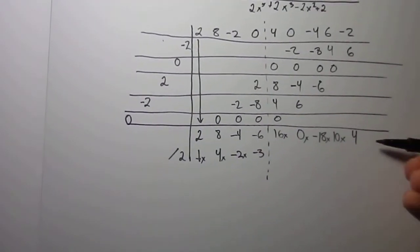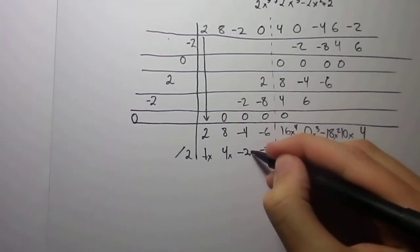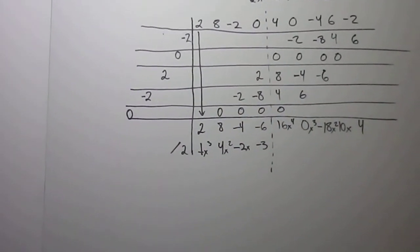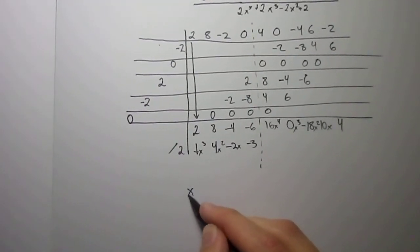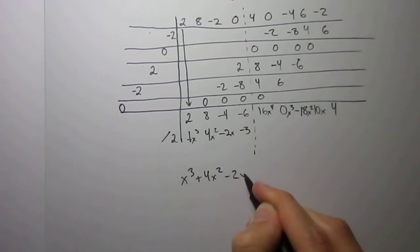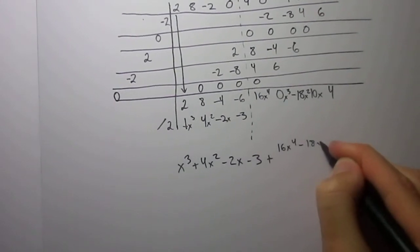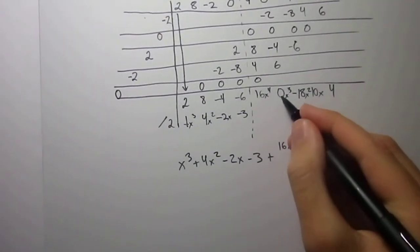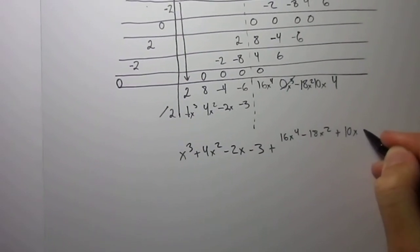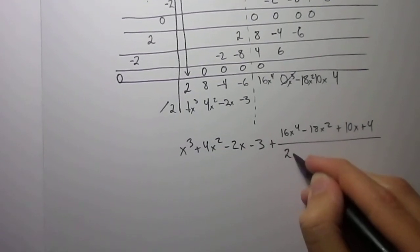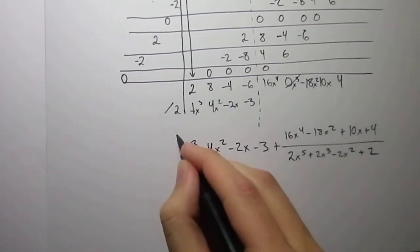Now, just go this way. You have 1, 2, 3, 4, so just numerically. Likewise, 1, 2, 3. And that's it. That's basically all that you have to do. And now, just put it all together. x cubed plus 4x squared minus 2x minus 3 plus 16x fourth minus 18x squared because you do not have to put that 0 there since that entire thing will cancel out. Plus 10x plus 4. Divide that by 2x to the fifth plus 2x cubed minus 2x squared plus 2. That's your answer.